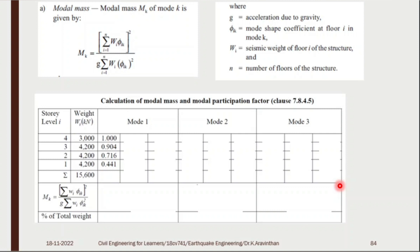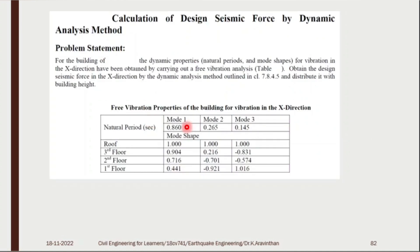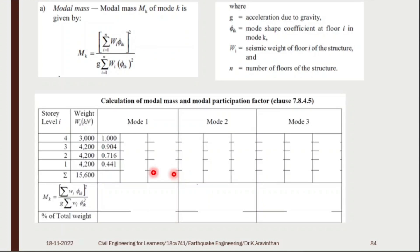Step 1: Modal mass. How to find modal mass? Formula: summation of (W × φ) divided by g × summation of (W × φ²). Draw a table with story levels 1, 2, 3, and roof (4 floors). The weight on each floor: floors 1, 2, 3 are 4200 kN each, and the roof is 3000 kN. For mode shape 1, write down the values: 1, 0.9, 0.716, 0.441.